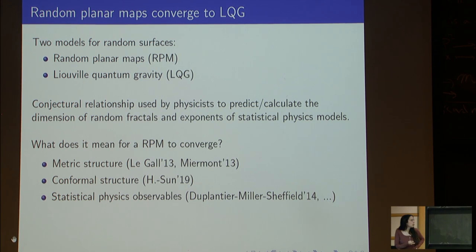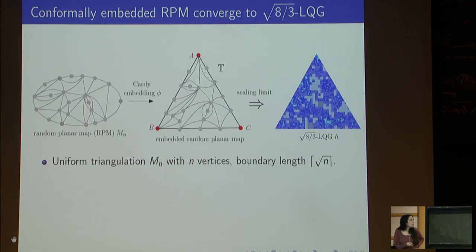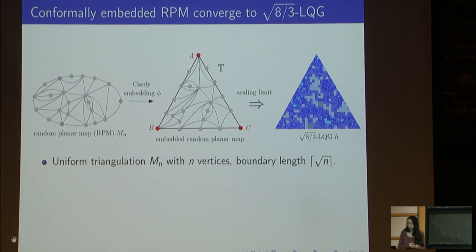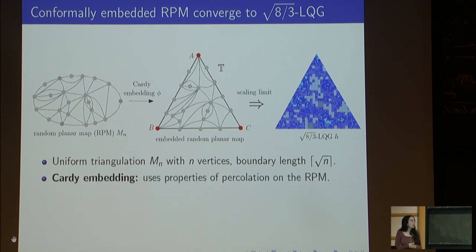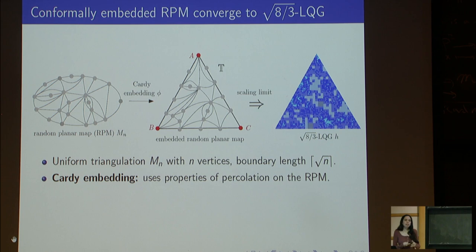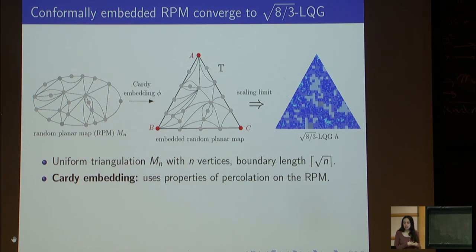The main result concerns convergence of the conformal structure. We consider a uniformly sampled triangulation with n vertices and with a boundary of fixed length equal to √n. We embed the planar map into the equilateral triangle using a specific rule called the Cardy embedding, which uses properties of percolation on the planar map. In the left figure the planar map is defined only modulo continuous deformations, but in the middle figure it has been drawn explicitly in the equilateral triangle so each vertex has a specific position.